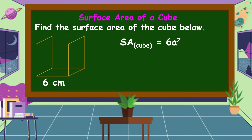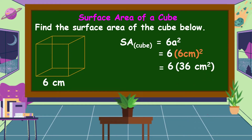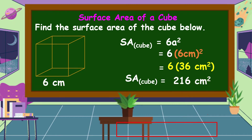Let's substitute the value of a: 6 times (6 cm)². Solving inside the parentheses: 6 cm × 6 cm = 36 cm². Then 6 × 36 cm² = 216 cm². This is the surface area of the cube.